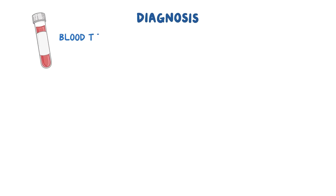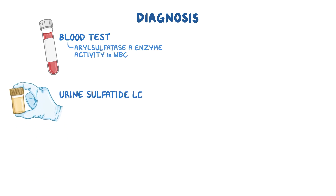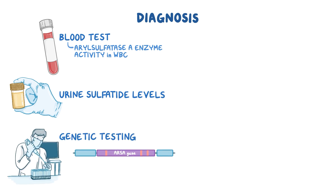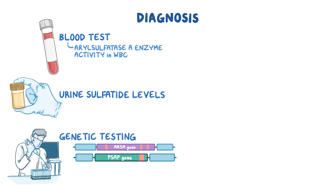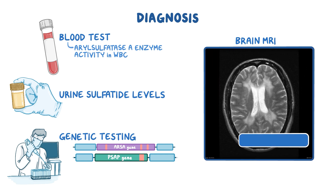Diagnosis includes blood tests to measure arylsulfatase A enzyme activity in white blood cells, measurement of urine sulfatide levels, and genetic testing to evaluate the ARSA and PSAP genes. A brain MRI in a person with MLD shows areas of hyperintensities in the white matter regions, which indicates the loss of myelin.